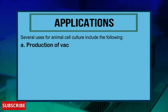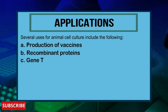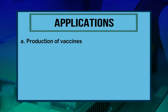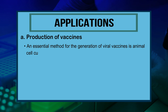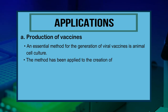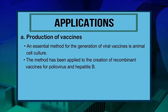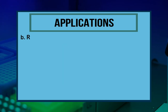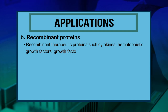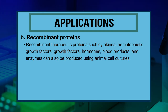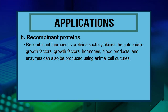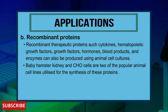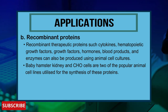Applications of Animal Cell Culture include: production of vaccines, recombinant proteins, gene therapy, model systems, cancer research, and production of biopesticides. Animal cell culture is an essential method for generating viral vaccines, including recombinant vaccines for poliovirus and hepatitis B, using immortalized cell lines. Recombinant therapeutic proteins such as cytokines, hematopoietic growth factors, hormones, blood products, and enzymes can also be produced; baby hamster kidney and CHO cells are among the most popular cell lines for this.